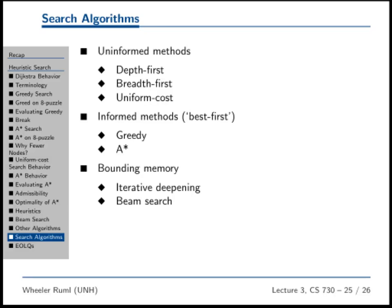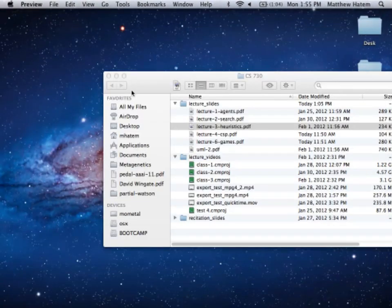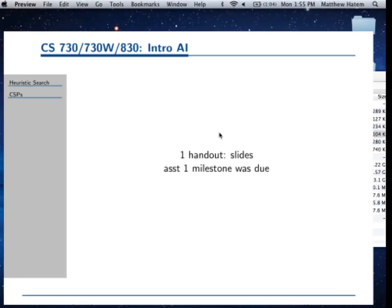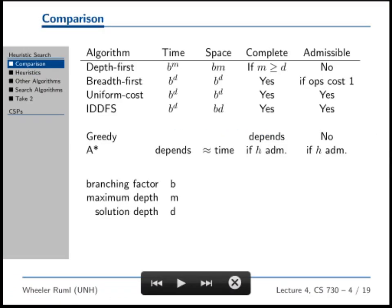This is kind of where we are at the moment. We talked about uninformed state space search, depth first search, breadth first search, uniform cost search. We talked about adding a heuristic to make a more informed search, like greedy best first search in A star. And we talked about bounded memory searches, like iterative deepening and beam search. So that's where we are. Any questions about that? Let's go on to today's lecture. We're not actually behind, we're right on track.